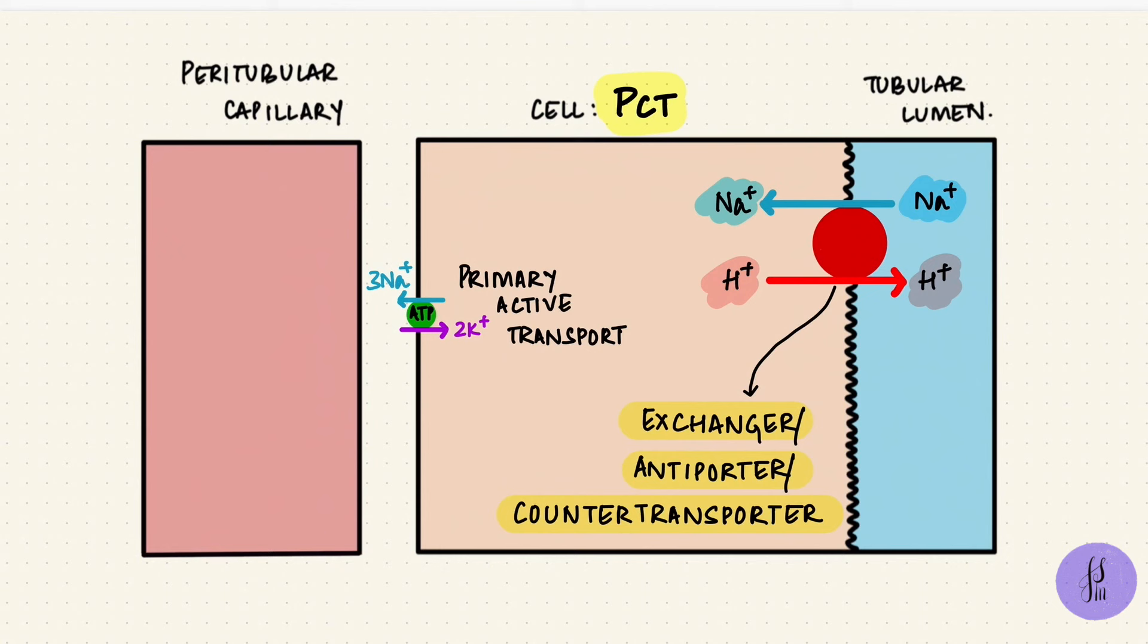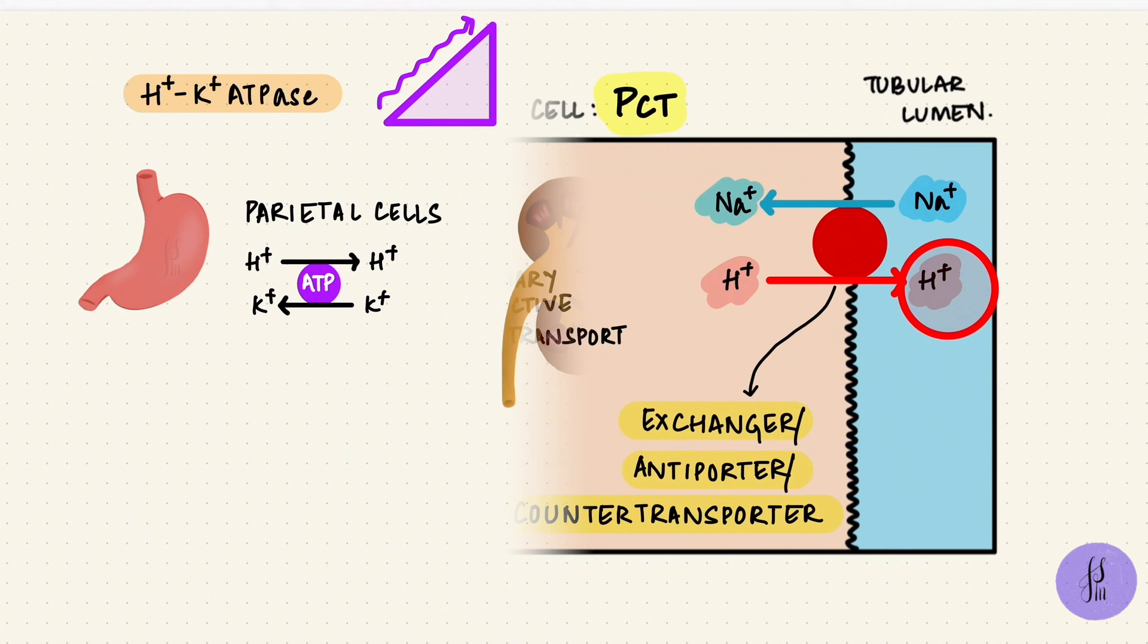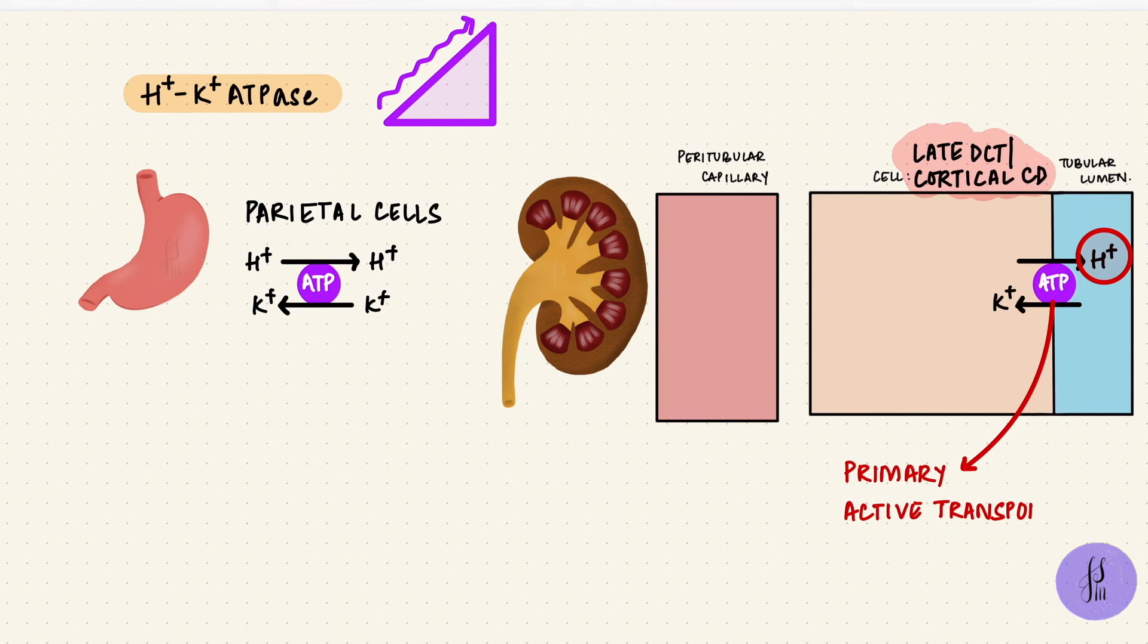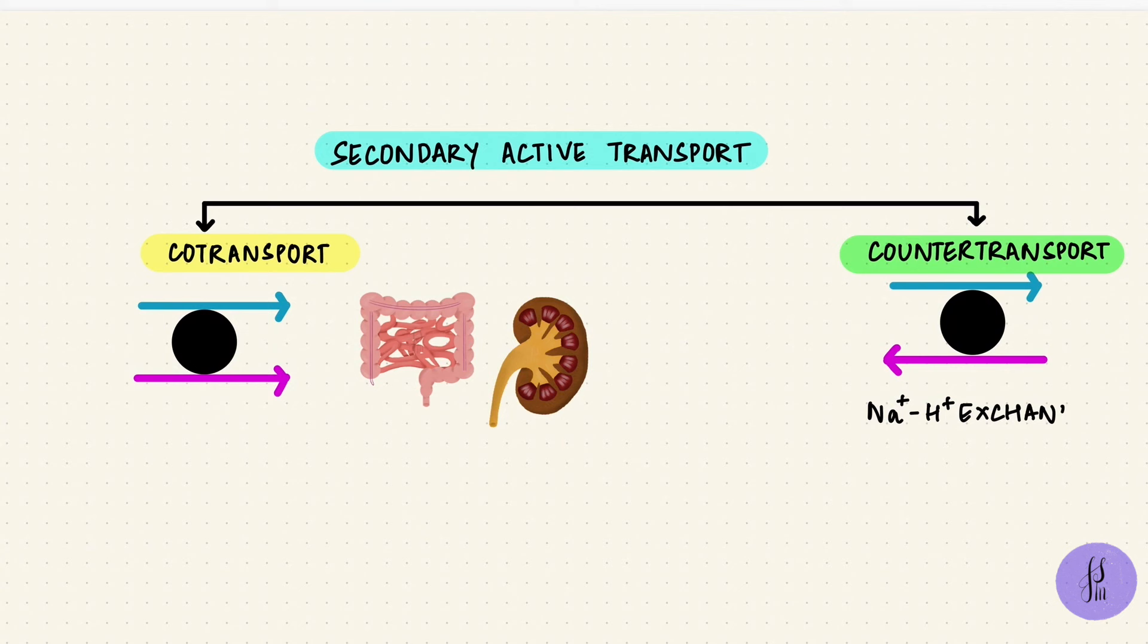The sodium-hydrogen exchanger is an example of secondary active transport, not to be confused with the proton-potassium ATPase. That was primary active transport. Similar to this is a sodium-calcium exchanger, which is in the kidneys and is also in cardiac muscle. So there are lots of different examples for co-transport and counter-transport, these were just two that I used to explain them.